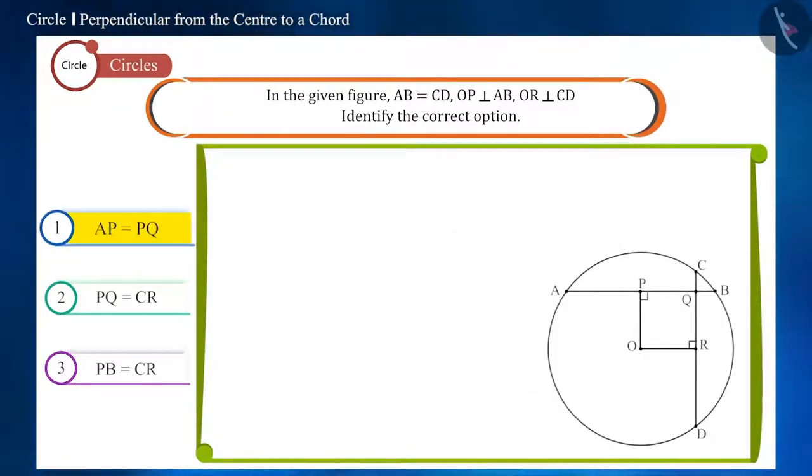Look at the first option. We are given that line segment OP is perpendicular to chord AB and according to the figure, O is the center of the circle. We know that a perpendicular drawn from the center of the circle to a chord bisects the chord. Therefore, AP and PB will be equal.